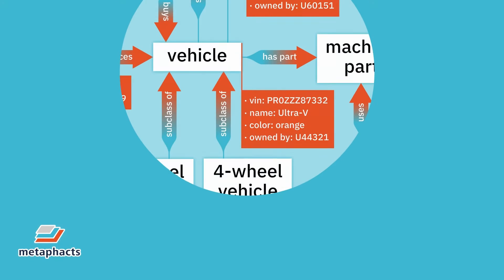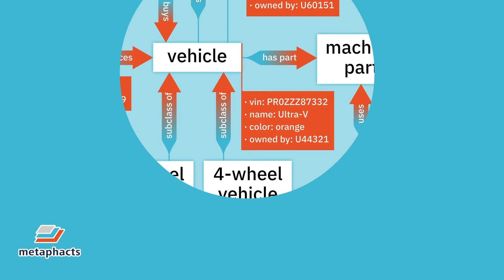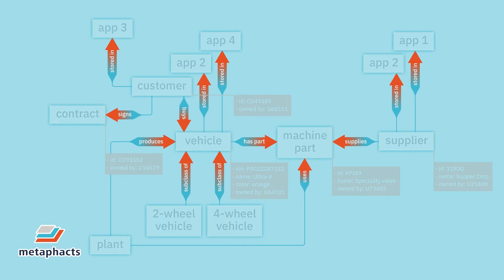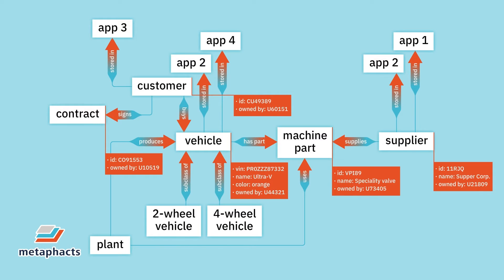So let's have another look at our example for vehicle. A vehicle can have certain attributes, like an identification number or a color, as well as relations to other concepts relevant to the business, such as machine parts, suppliers or customers. This logical structure comes naturally and is evident to a human like Ray, but not to a machine.